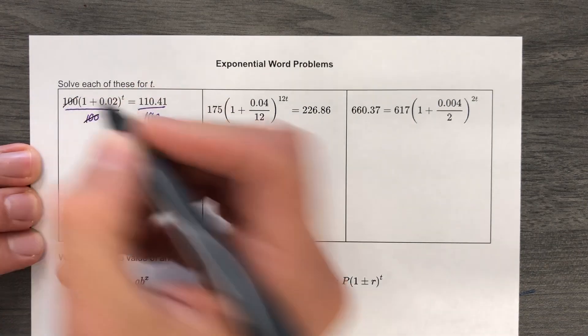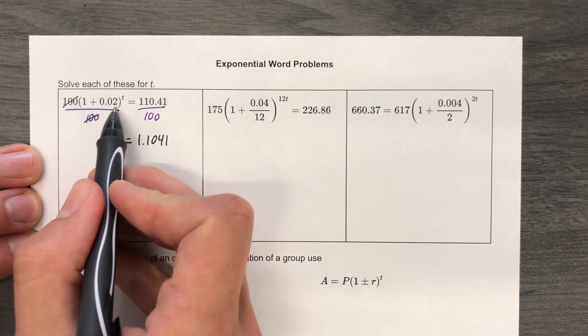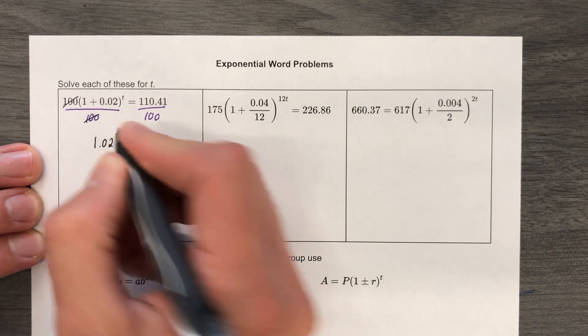Okay, so these 100s canceled. And let's just go for the obvious. 1 plus 0.02, we can go ahead and do that. That's 1.02, and we're going to raise it to the T power.